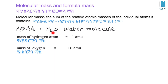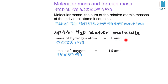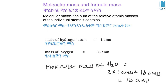The molecular mass is calculated by summing the atomic mass units of all atoms in the molecule. The atomic mass units give us the molecular mass of water, which is equal to the sum of the atomic masses of hydrogen and oxygen.